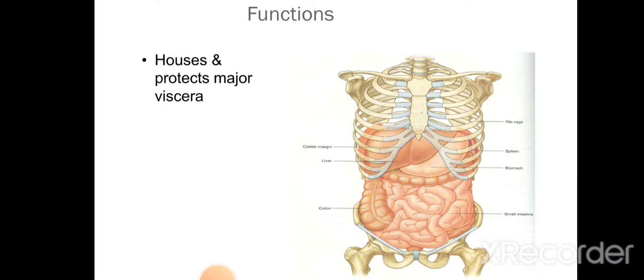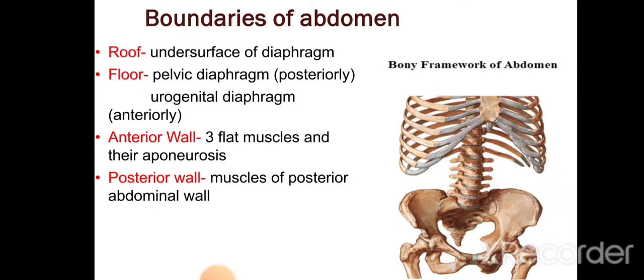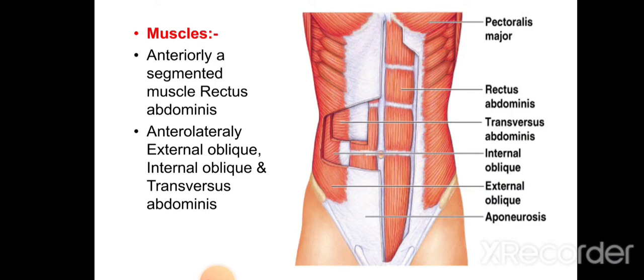The boundaries of the abdomen: it has a roof formed by the undersurface of the diaphragm, a floor formed by the pelvic diaphragm on the posterior side and the urogenital diaphragm on the anterior side. It has an anterior wall made up of three flat muscles and their aponeuroses, and a posterior wall made up of the muscles of the posterior abdominal wall.